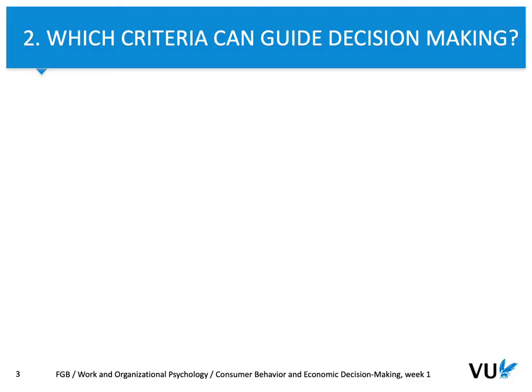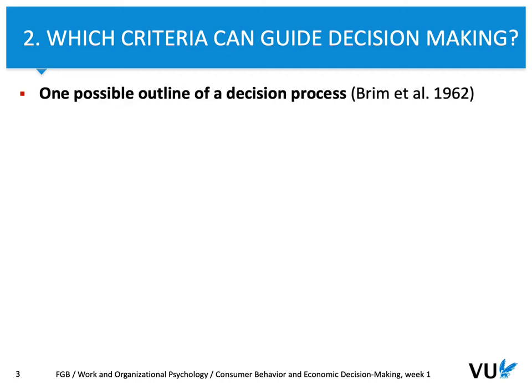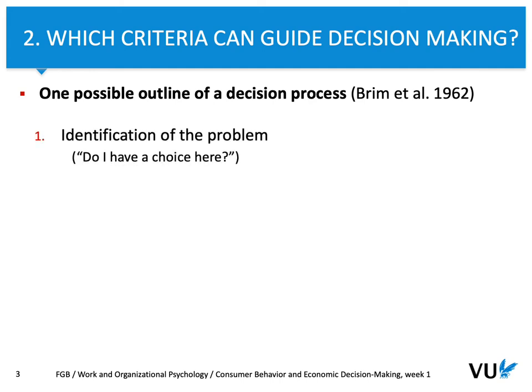To understand the process of decision-making, we need to take into account specific criteria that can guide decision-making. One theory that describes the decision process is as follows. Brim suggested that the whole process can be distinguished from other specific intellectual processes because it involves multiple elements, and thus it's pretty complex.